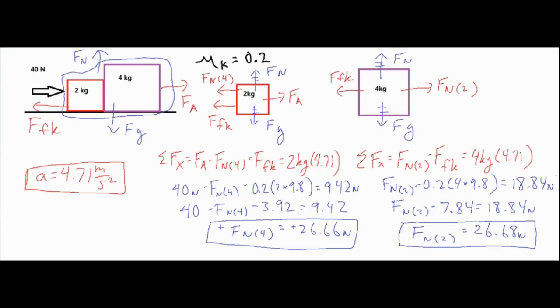We solved for our two normal force values. We had an applied force of 40, normal force is the contact force we're looking for, and the force of kinetic friction just for the 2 kilogram block sliding is the mu value 0.2, the coefficient of kinetic friction, times Fn, which equals Fg, so mass times 9.8 equals 3.92. Then 40 minus the normal force minus 3.92 equals 9.42 newtons. Add the 3.92 to both sides, subtract the 40 from both sides, which gives minus Fn equals negative 26.66. The negatives drop out and you get 26.66 newtons.